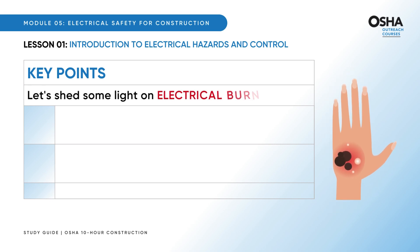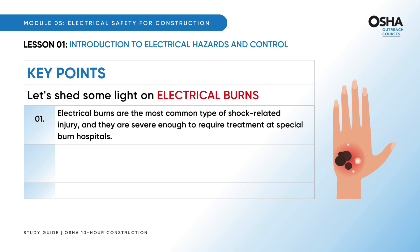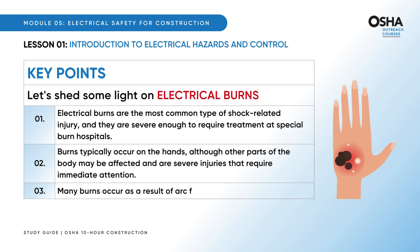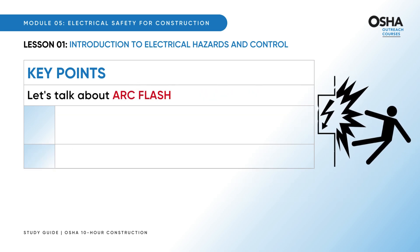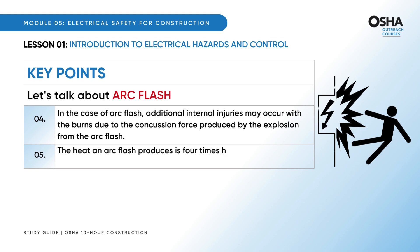Electrical burns are the most common type of shock-related injury and are severe enough to require treatment at special burn hospitals. Burns typically occur on the hands, though other parts of the body may be affected, requiring immediate attention. Many burns occur as a result of arc flash. In the case of arc flash, additional internal injuries may occur due to the concussion force produced by the explosion. The heat from arc flash is four times hotter than the sun's surface.